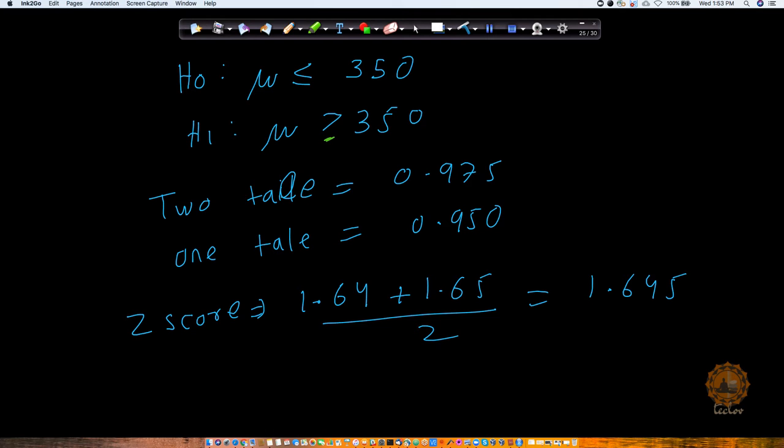Now what will be in this case the critical region? If you remember when I was talking about my two tail test, and if I have taken the significance level as 5%, what we were doing in that case, we were looking at 2.5% of the data from here and 2.5% from here. So I was calculating the Z score for 0.975. But now since it's a one tail test, we have to consider this whole 5% here.